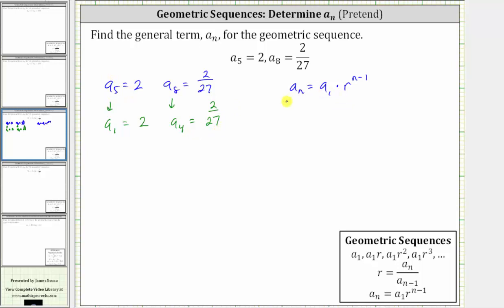So if we substitute 2/27 for a_n, this means n is equal to 4 in the equation, which gives us 2/27 equals a_1, which is 2, times r, the unknown, raised to the power of n minus 1, which is 4 minus 1, which gives an exponent of 3.